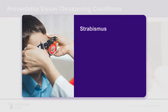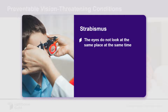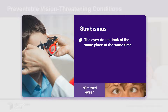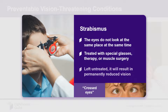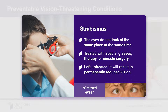Strabismus is when the eyes do not look at the same place at the same time. It is sometimes called crossed eyes. Strabismus is treated with special eyeglasses, therapy, and sometimes eye muscle surgery. If left untreated, the brain will learn to ignore the image from the turned eye and result in permanently reduced vision or amblyopia.